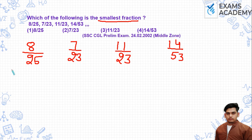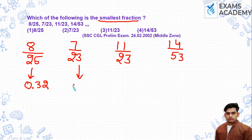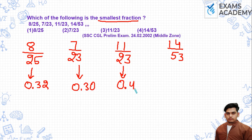If we look at approximate values: 8 by 25 has an approximate value of 0.32, 7 by 23 is approximately 0.30, 11 by 23 is approximately 0.47, and 14 by 53 is approximately 0.26.